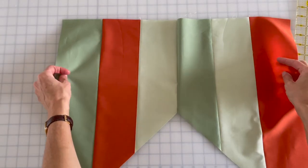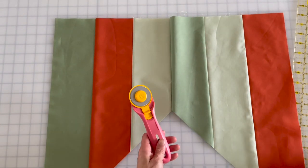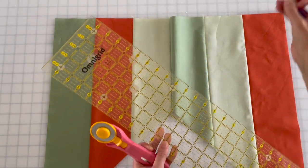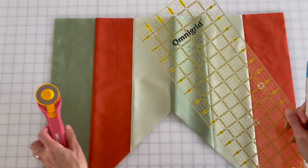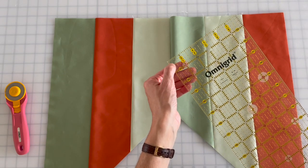To sew your Y seams for the star cross pattern, you need a ruler, a rotary cutter, a marking tool, and pins. Make sure that your ruler has a quarter inch mark on it because you're going to be using that quite a bit.